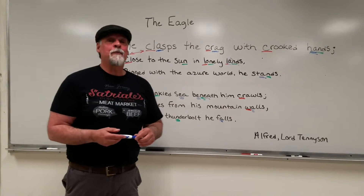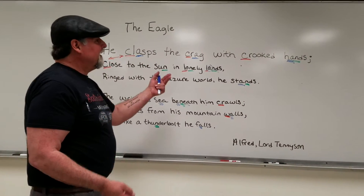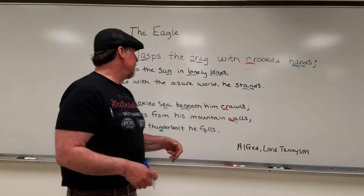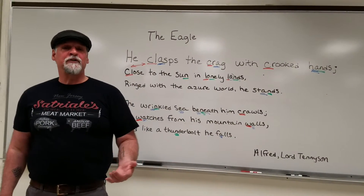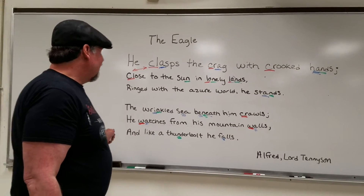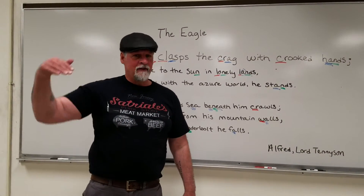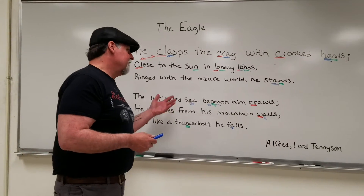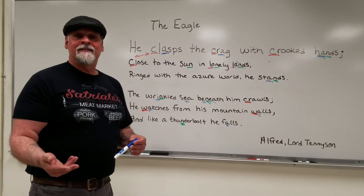Note also how much figurative language is used in the poem. We have great examples of personification and simile. 'He clasps the crag with crooked hands' — he being the eagle. Eagles don't have hands, they have claws, so clasping with hands is personification. 'The wrinkled sea beneath him crawls' — the sea is personified; the sea doesn't crawl. 'And like a thunderbolt he falls' is a simile comparing the eagle swooping down after prey to a thunderbolt falling from the sky. This is a beautiful poem with a lot of music — a very good example of how one poem can use many poetic devices to give it a sonic and picturesque quality of imagery.